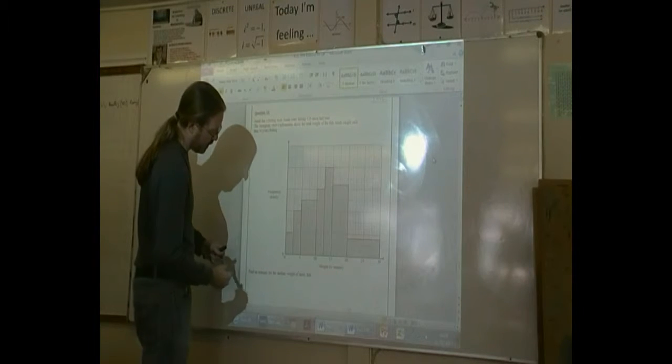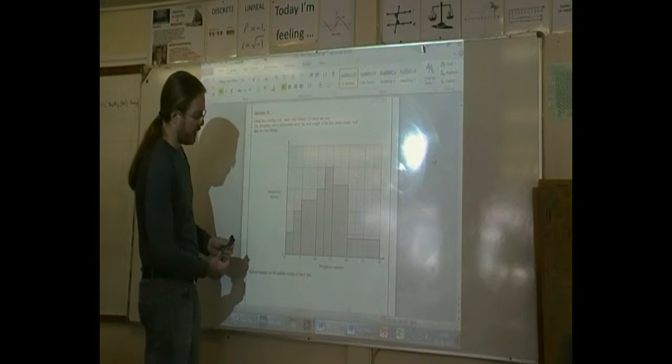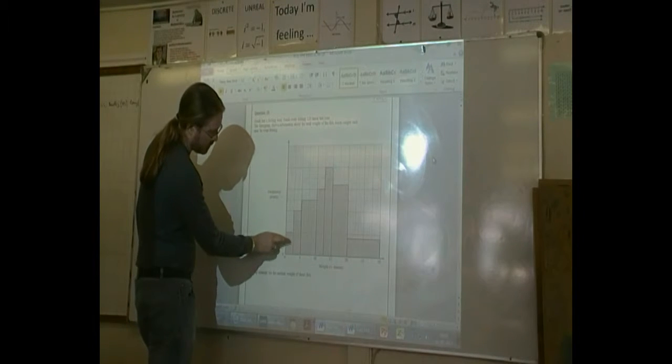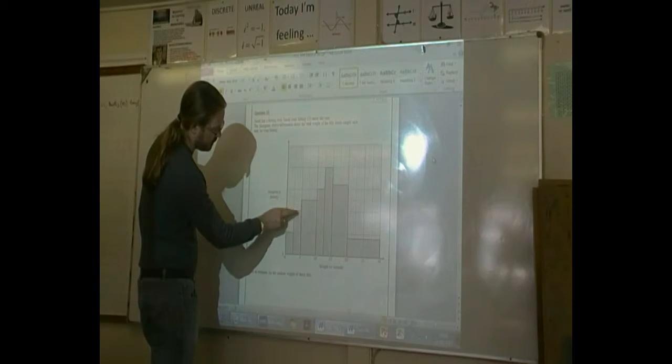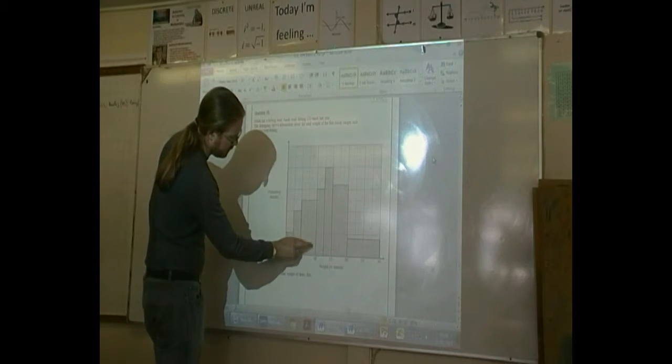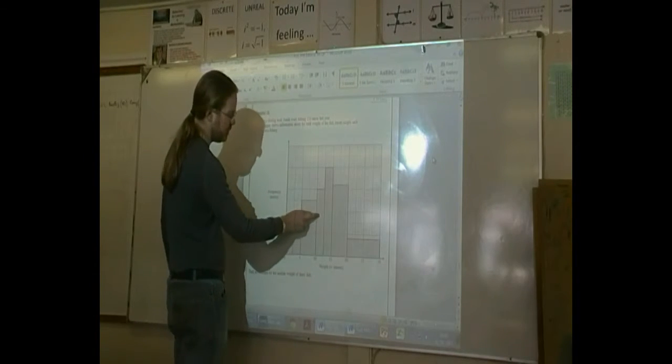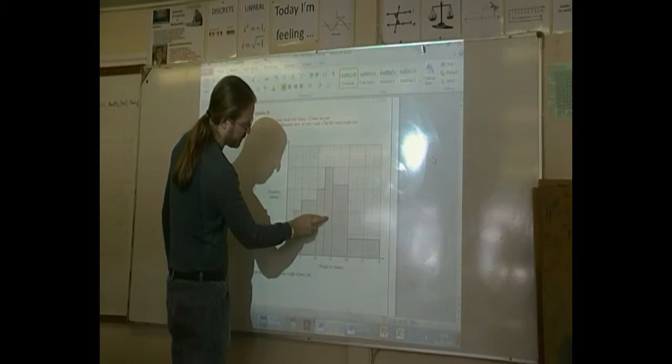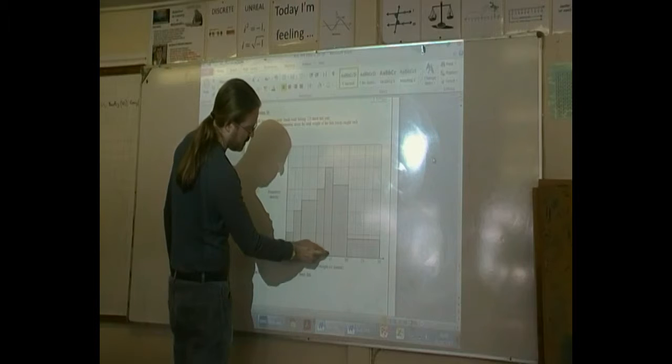So I count up how many squares there are. So I've got 1, 2, 3, 4, 5, 6, 7, 8, 9, 10, 11, 12, 13, 14, 15, 16, 17, 18, 19, 20, 21, 22, 23, 24, 25, 26, 27, 28, 29, 30.